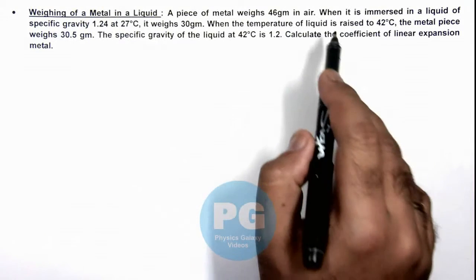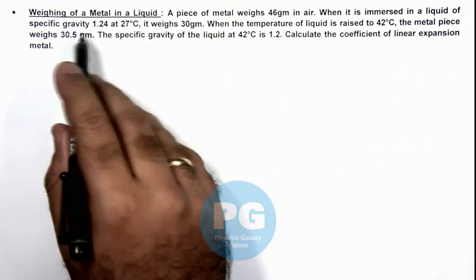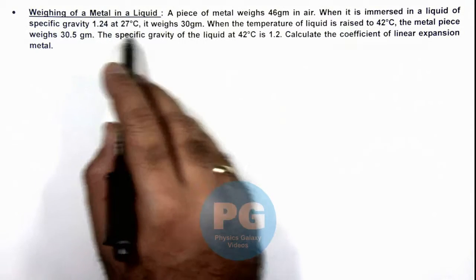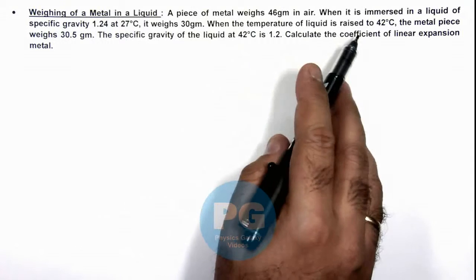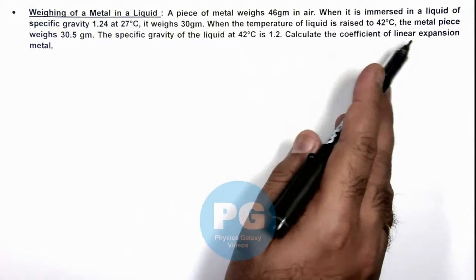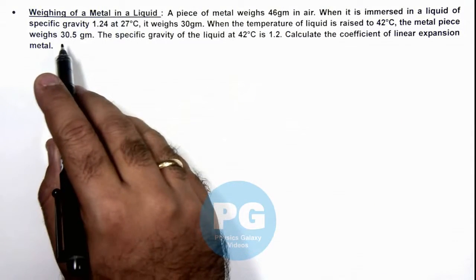We are given that a piece of metal weighs 46 grams in air, and when it is immersed in a liquid of specific gravity 1.24 at 27 degrees Celsius, it weighs 30 grams. When the temperature of liquid is raised to 42 degrees Celsius, the metal piece now weighs 30.5 grams.